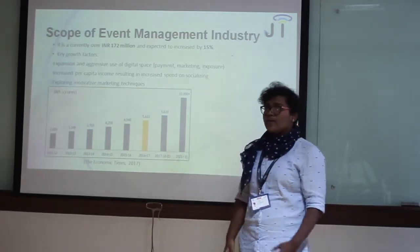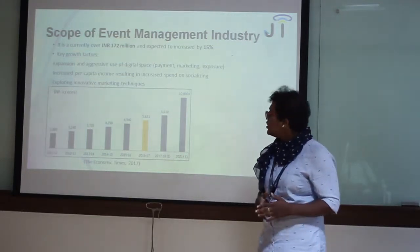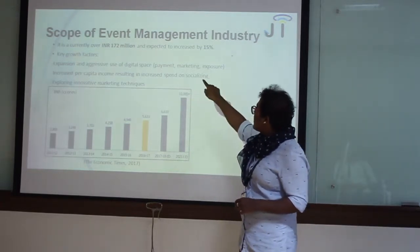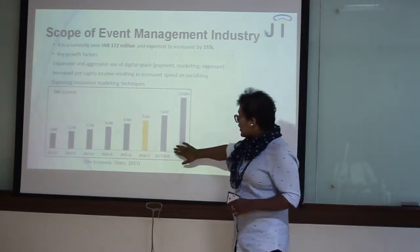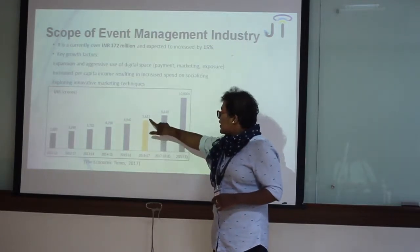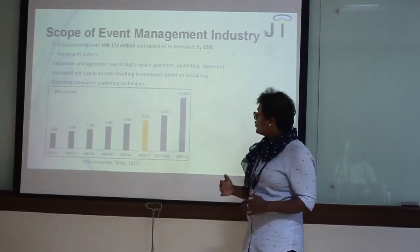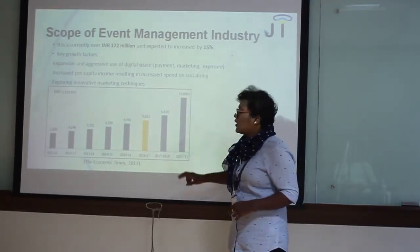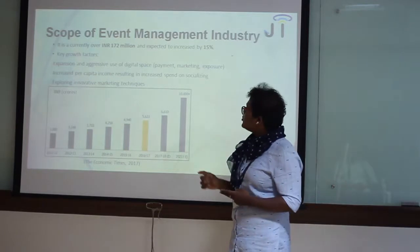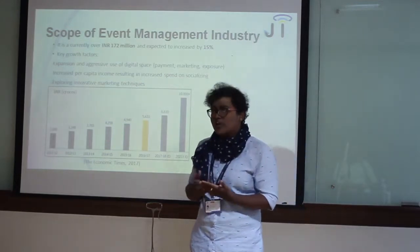Scope of the Event Management Industry: In India, the event management industry started in the year 1990 and gradually started to grow in the year 2002. Presently, the value of the event management industry is 172 million, expected to grow by 15%. According to Economic Times 2017, the event management industry was estimated at 5,631 crores in 2016-17 and is expected to reach 10,000 crores in the year 2021. The growth drivers include expansion and use of digital space — meaning payment, marketing, and exposure done through online platforms.